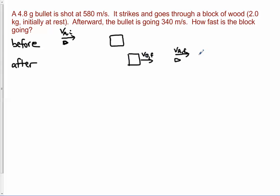Afterward, the bullet has gone through the block and is moving at 340 meters per second — that's VA final. We want to know the velocity of the block, VB final, because the block is going to move after the bullet went through it. We expect the block to move to the right. This is an isolated system — it's one-dimensional, horizontal only, with no other forces acting horizontally. So we must have conservation of momentum.